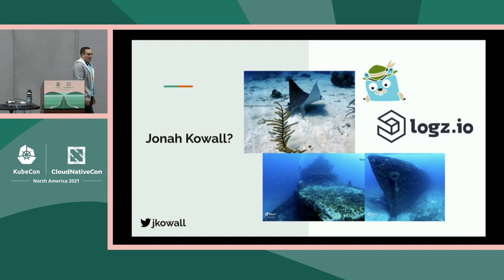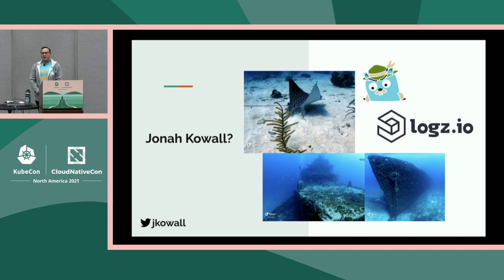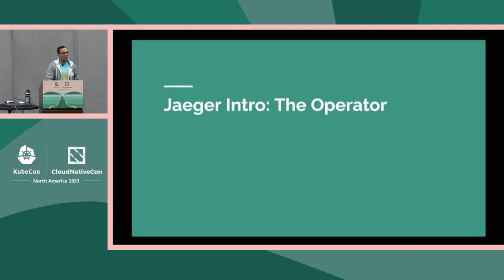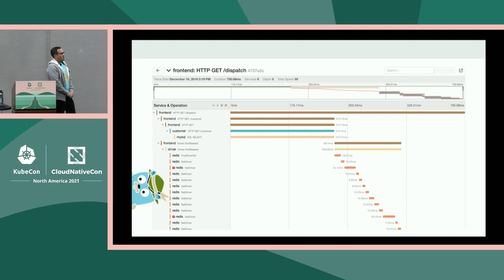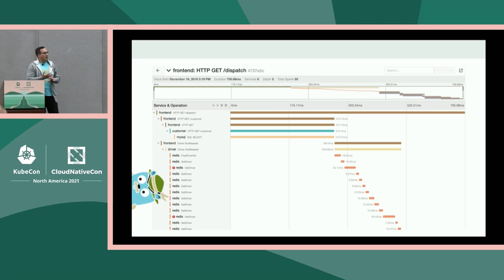My company is a SaaS observability company. We focus on an open source based platform, and Jaeger is part of our platform — same UI, same usability with a bunch of other stuff around it. Jaeger is a great CNCF project; it's been graduated for quite some time. The collector component of Jaeger was actually forked to create the OpenTelemetry collector, and we're starting to bring some of that back into Jaeger — we're essentially going to just be consuming the upstream collector.